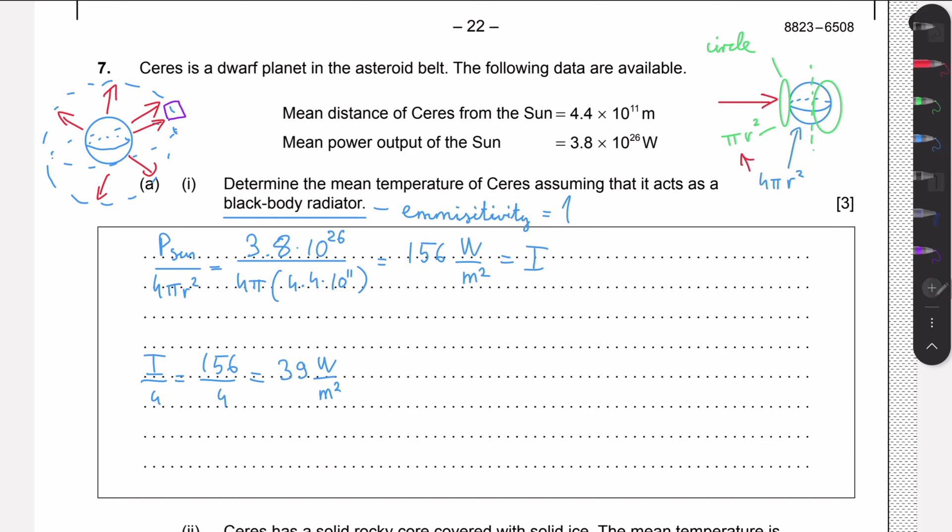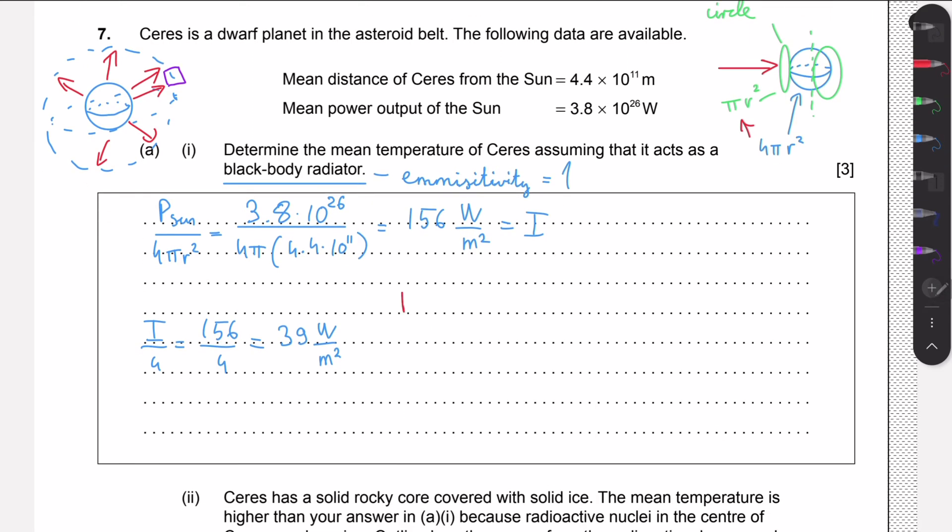Now we just need to apply the formula we can find in the data booklet, which is this. The power is equal to emissivity times the Stefan-Boltzmann constant times the area times the temperature to the fourth. Luckily, we know that power over area is just intensity. So if we rearrange it like this, we will find that power over area is just the intensity we have calculated. We know that e is 1 because it's a perfect blackbody. Stefan-Boltzmann constant is just a constant. We don't need the area over here anymore as we just divided by that. That's why we have intensity on the left.